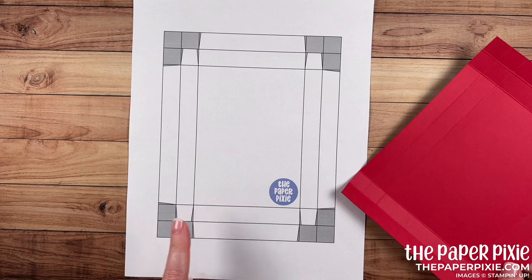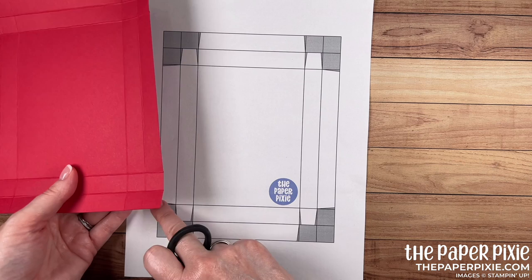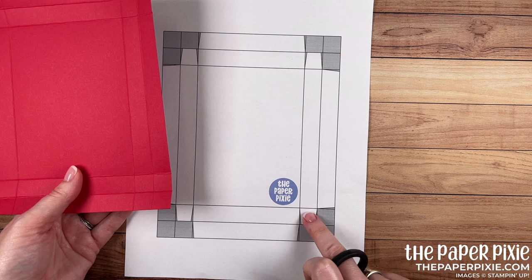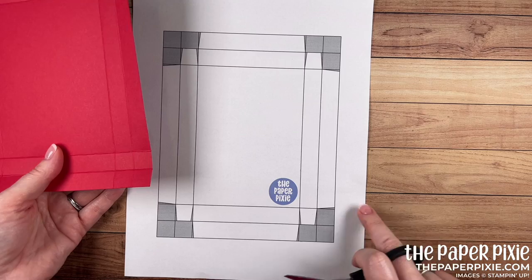Now moving on to the box lid we're going to cut this one in the exact same way as the box base starting with the bottom here with this in portrait mode. Again I'm going to cut up each of the vertical score lines stopping at the second horizontal score line. Remove these three squares in the corner leaving behind a tab. Same thing over here.